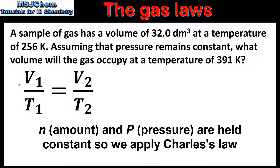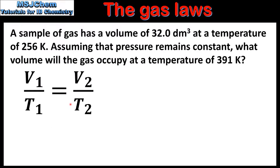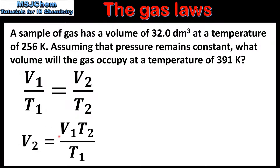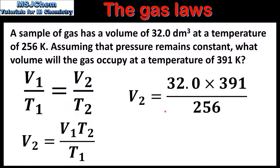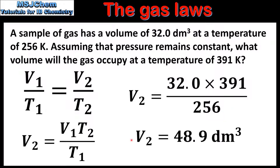In the question we're given V1, T1 and T2, so we need to rearrange this equation to solve for V2. V2 is equal to V1 times T2 divided by T1. Substituting the values: V1 is 32.0 cubic decimetres, T2 is 391 kelvin, and T1 is 256 kelvin. This gives us a value for V2 of 48.9 cubic decimetres.